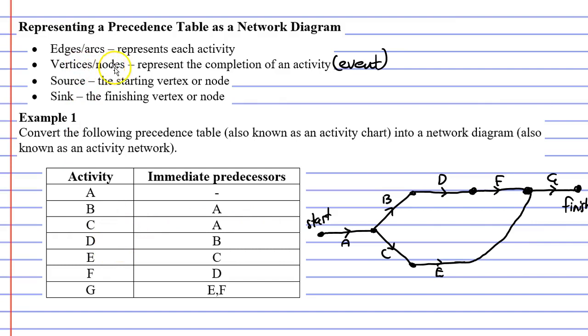Our vertices or nodes represent the completion of an activity. We call this an event. So this node represents the completion of activity A. This node represents the completion of both activities E and F.